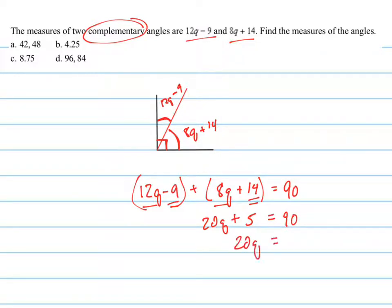Now 20q, subtract 5 from both sides, 20q equals 85. So q equals 85 over 20, which can be reduced, each of those can be divided by 5. So if you divide 20 by 5, you get 4 and if you divide 85 by 5, you get 17. Yeah, 17 over 4. So that would be the simplified fraction of that.